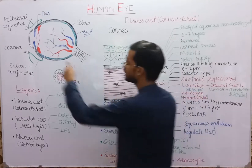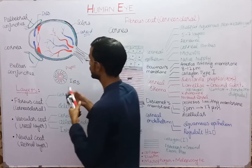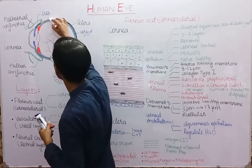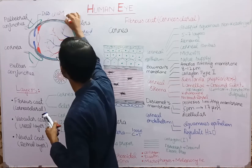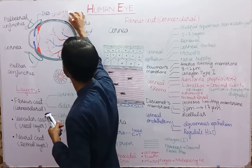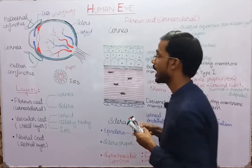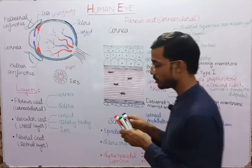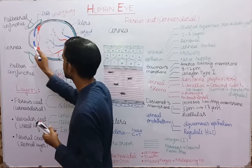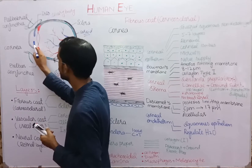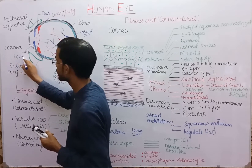Here is the ciliary body, shown in red color. And this structure here is the iris.